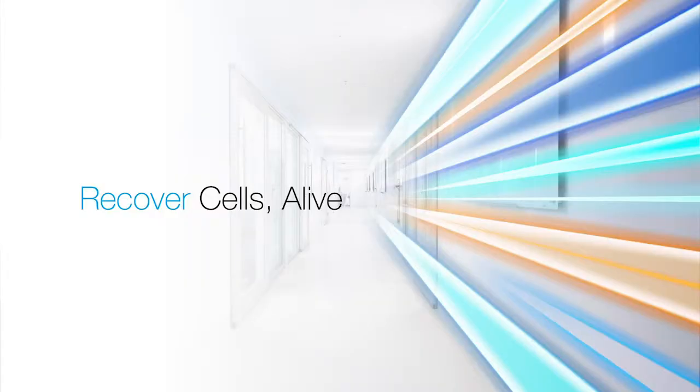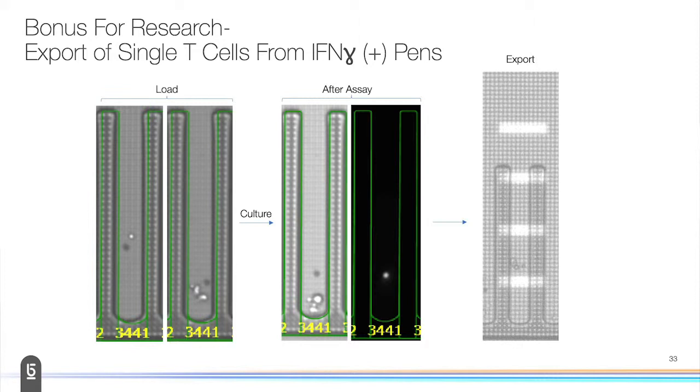Once we've done all this, we want to recover that exact interaction that we like. Here's an example: we have a record of which nano pen we're on—this is nano pen 3441. We can see basically the load: the bead plus the T cell on the left, and then we have the two tumor cells get loaded. Then we culture overnight, and the next day we have positivity for interferon gamma. Then we use our light to take this group back out. If you're really good, you can culture these cells, although they're single and they don't like to culture too well by themselves. A lot of people are doing TCR sequencing on these, doing some validation in that way.